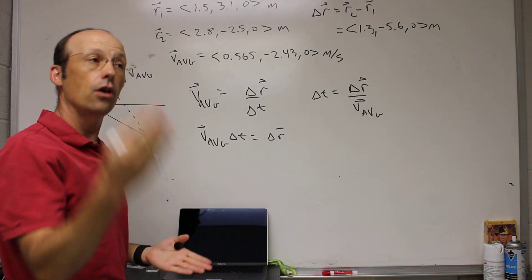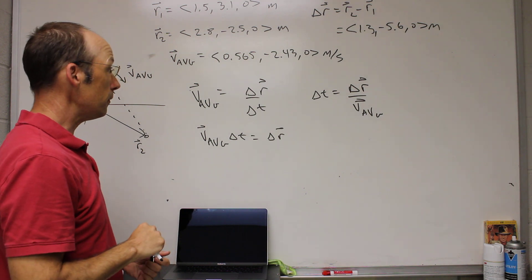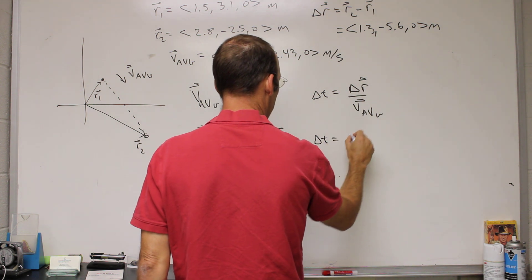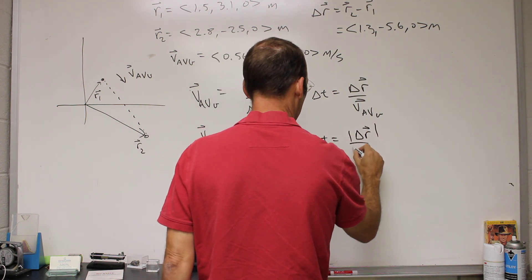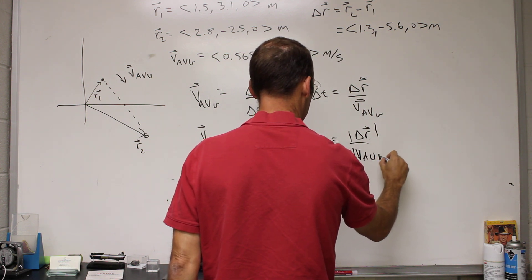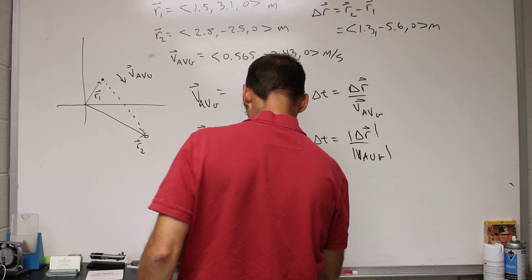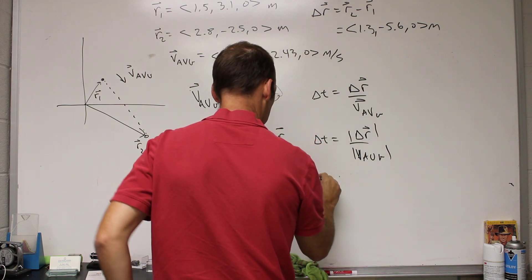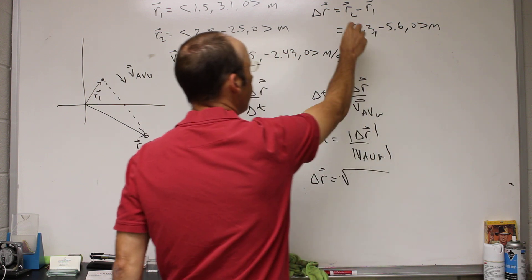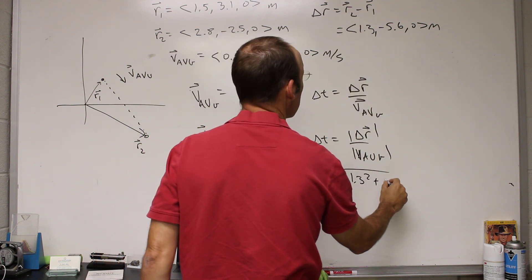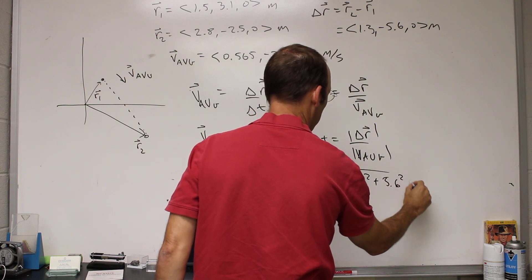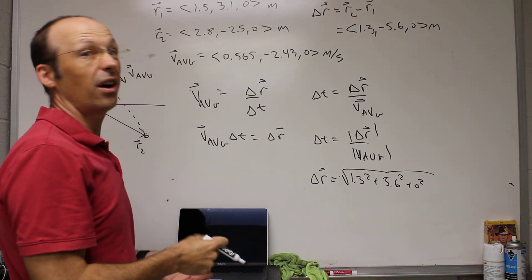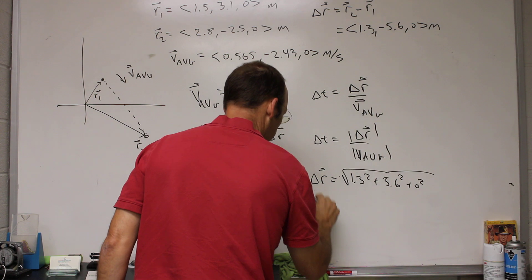You cannot divide a vector by a vector. Okay, so there's actually two options here. I could do this: delta t equals the magnitude of delta r over the magnitude of v average. So I could find the magnitude of delta r. It's going to be the square root of 1.3 squared plus 5.6 squared plus 0 squared. And I can get the value, this is magnitude.